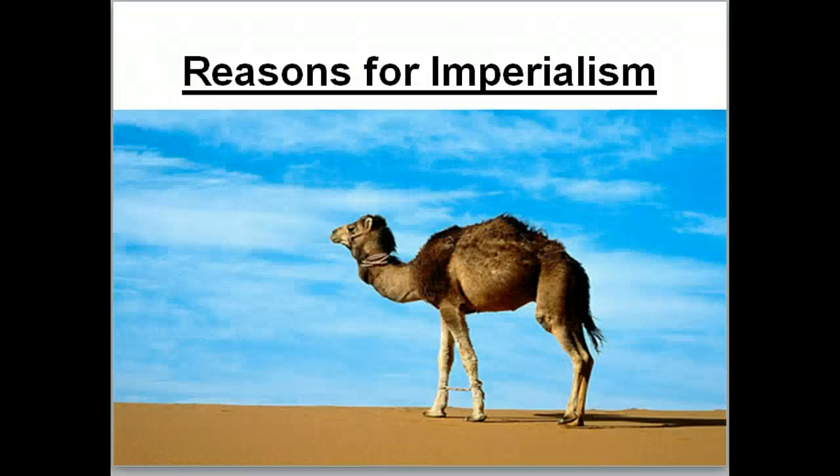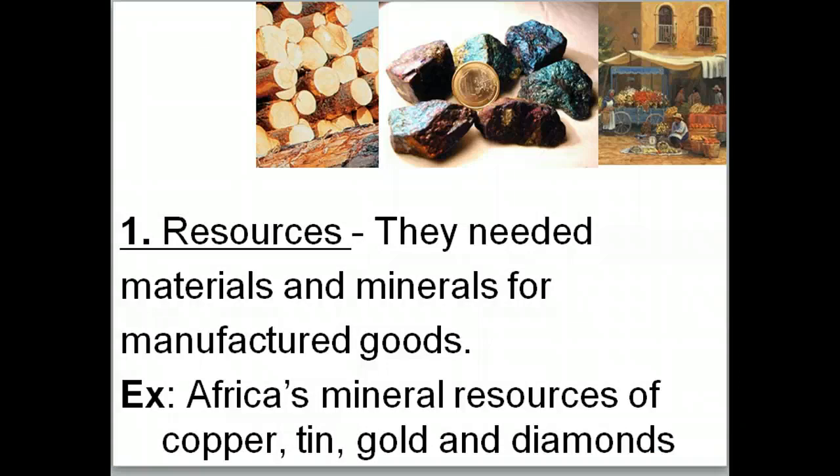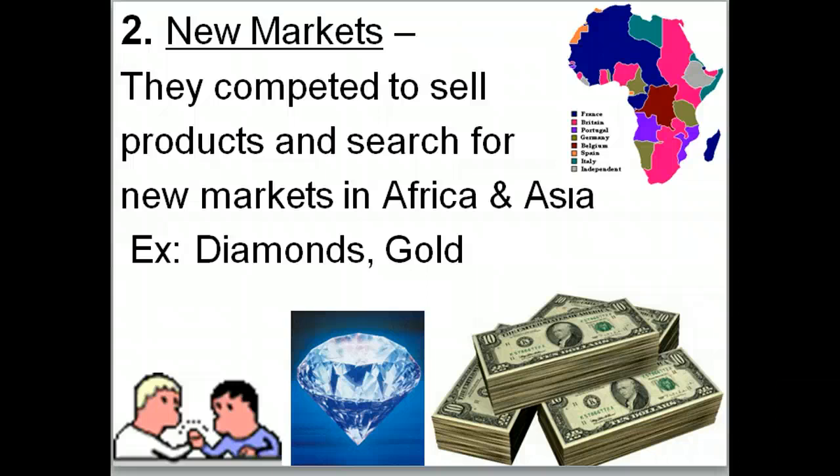The first reason for imperialism is resources. Empires need materials and minerals for manufactured goods — from Africa they want copper, tin, gold, and diamonds. They use tin to make cans, having switched from lead after realizing lead was leaching into food. The second reason is new markets. They compete to sell products and search for new markets in Africa and Asia. With China's large population they can sell many products, and because they're more powerful than Africans they can sell manufactured goods there as well.